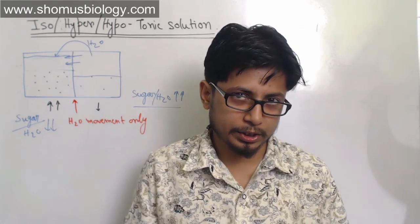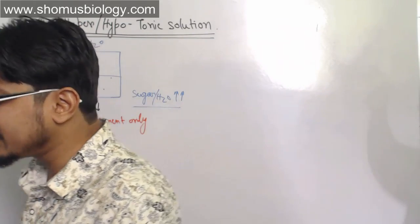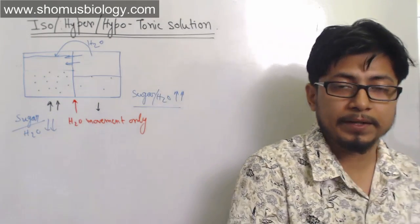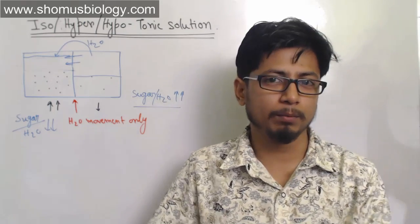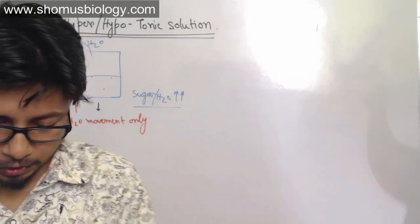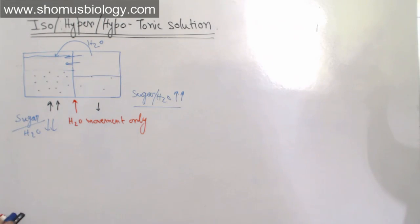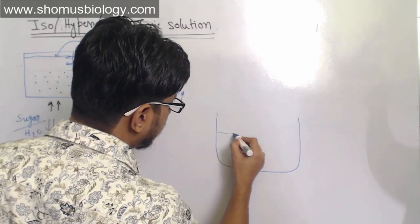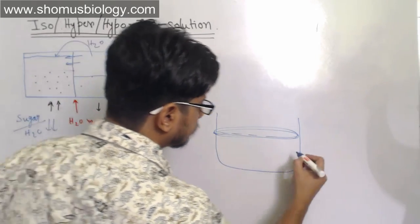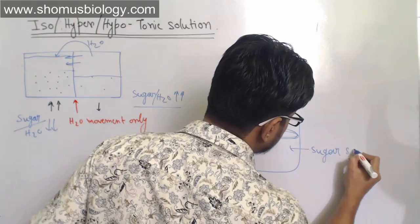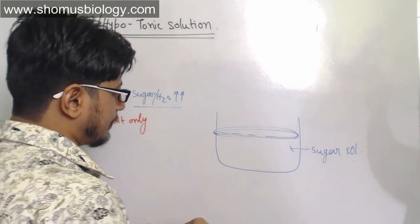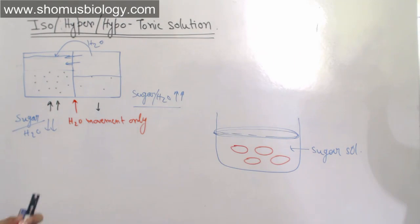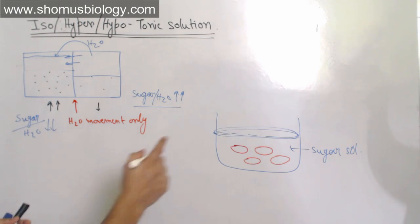Osmosis is the movement of water from low concentration of solute towards high concentration of solute. Tonicity is a phenomenon that regulates the net movement of water — it tells us in which direction the water will move. For example, consider a chamber with a sugar solution, and inside that solution we place a red blood cell.